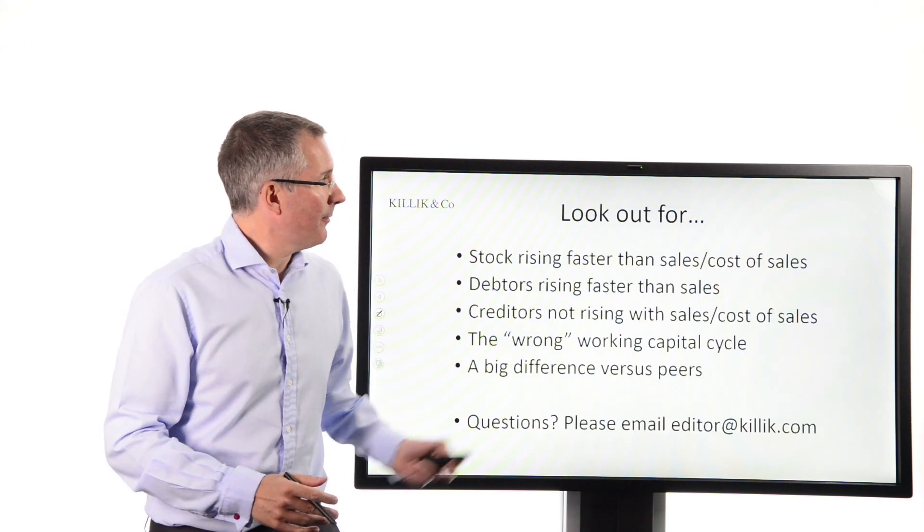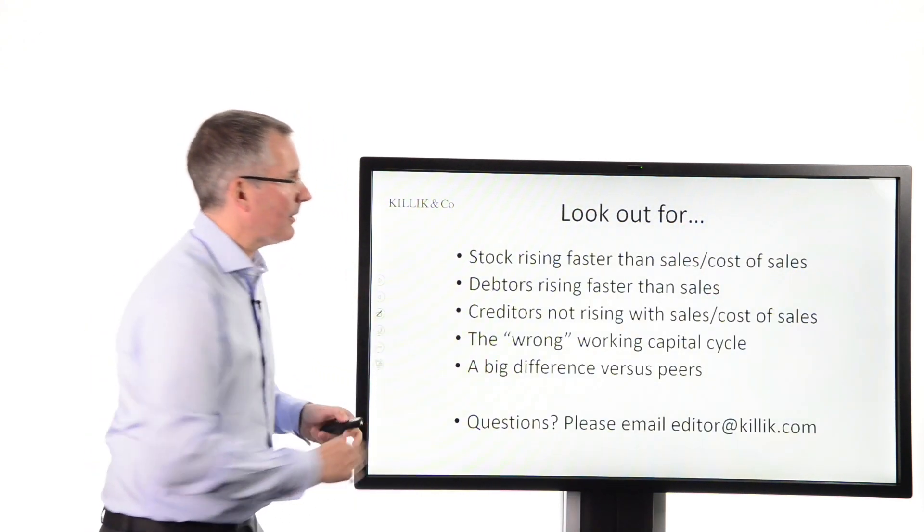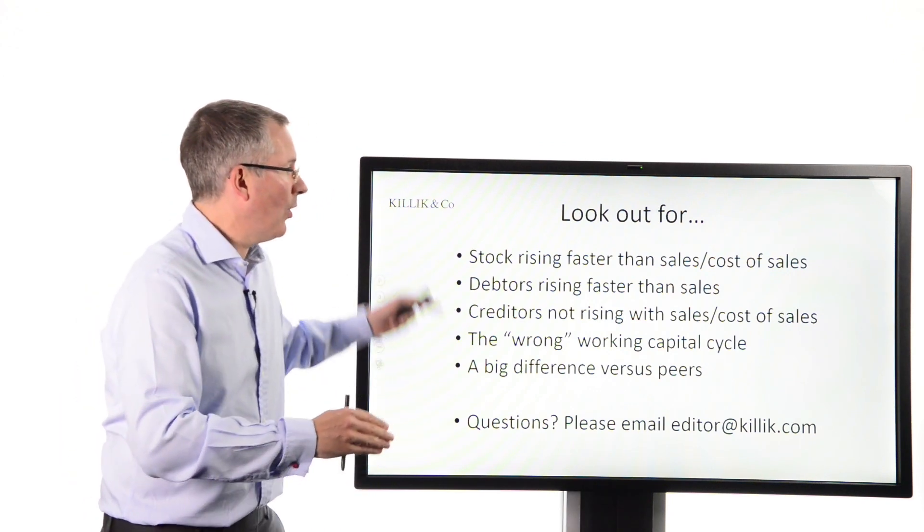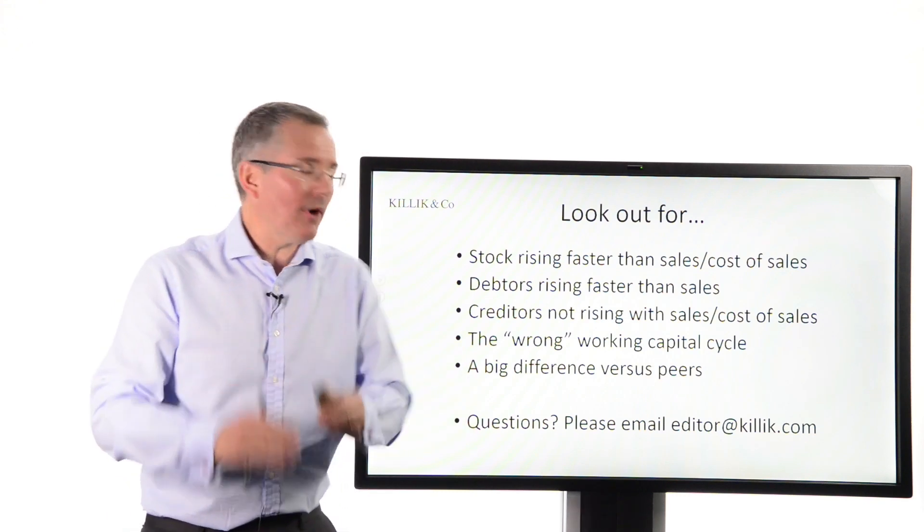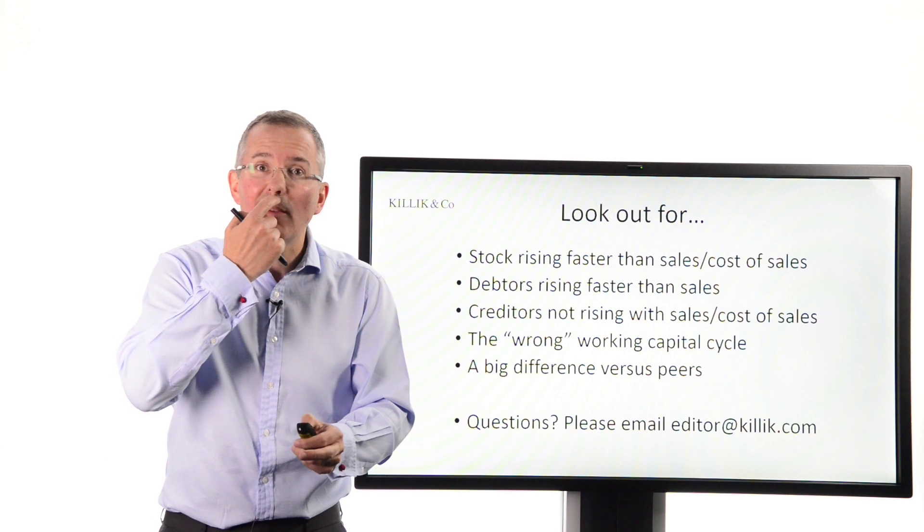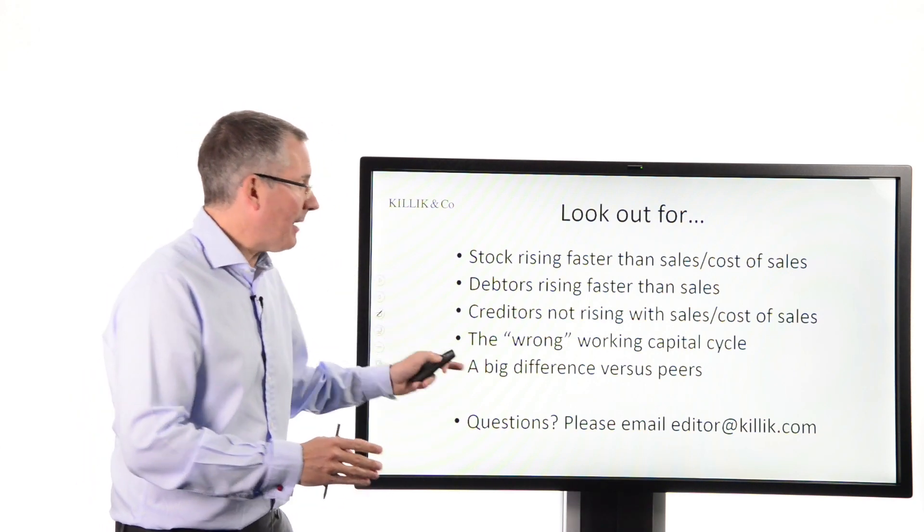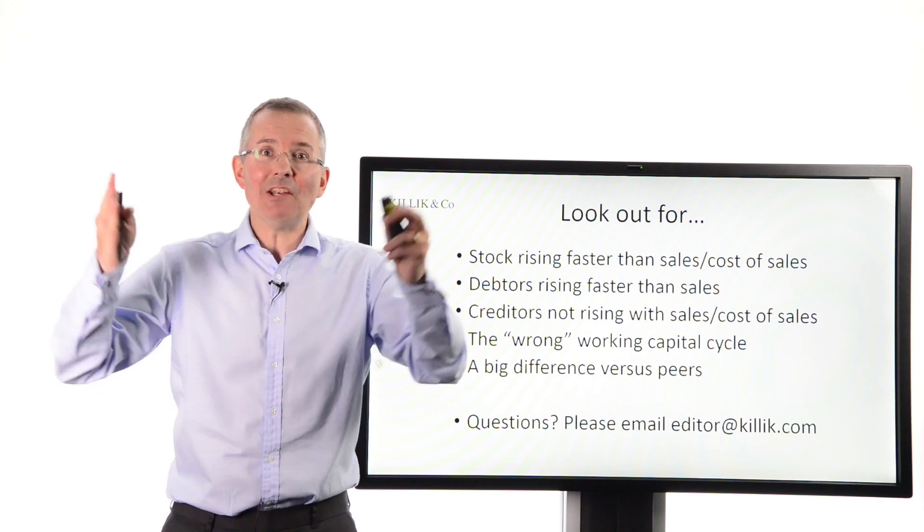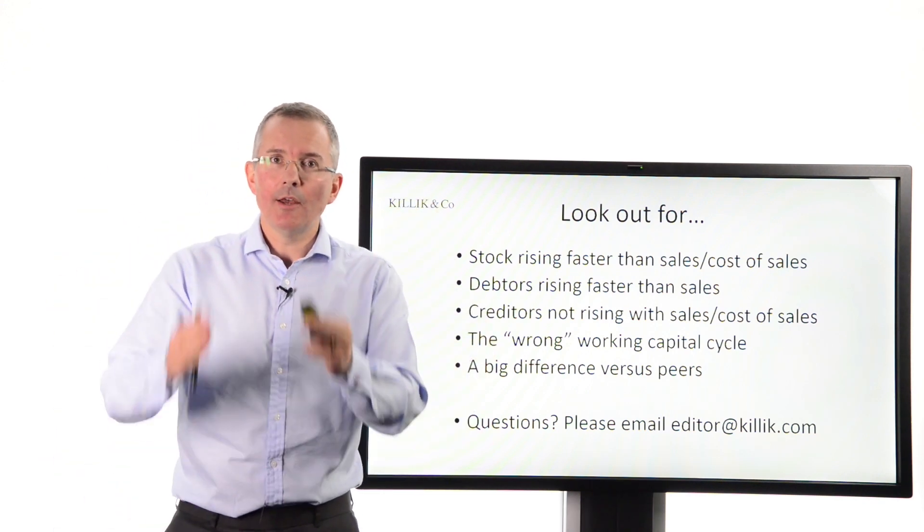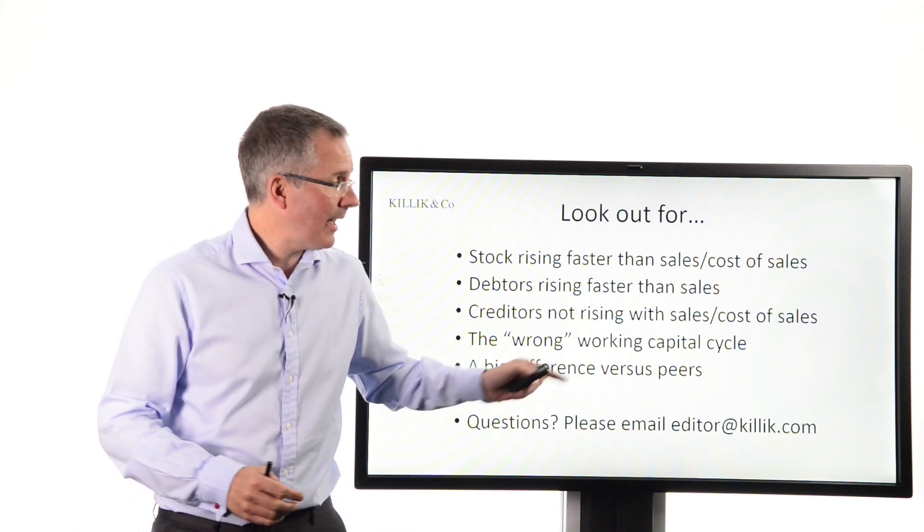So, in a nutshell, the message from this video is simple. Watch out for a working capital crisis. Stock, rising faster than sales, cost of sales. Receivables, out of control. Creditors, not matching a rising cost of sales. The wrong working capital cycle, in other words, for the business of this size and type. And a big difference versus peers or a big change versus peers. Now, that was fairly quick. Red flags are important. Any questions, feel free to email me at the usual address.